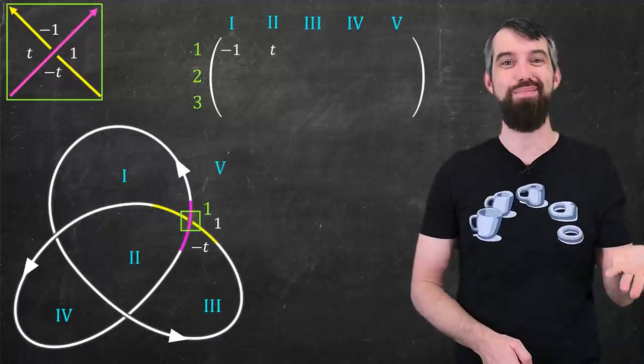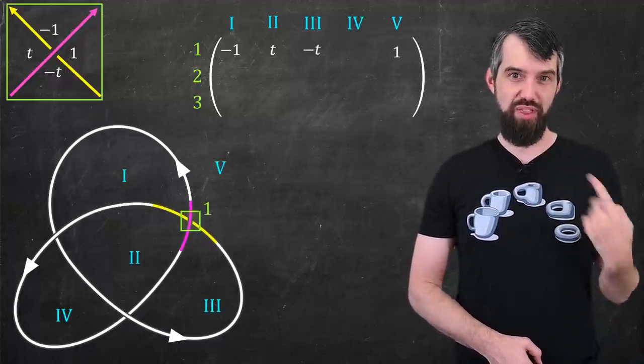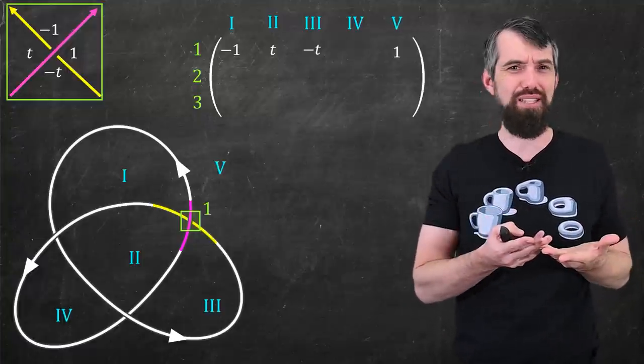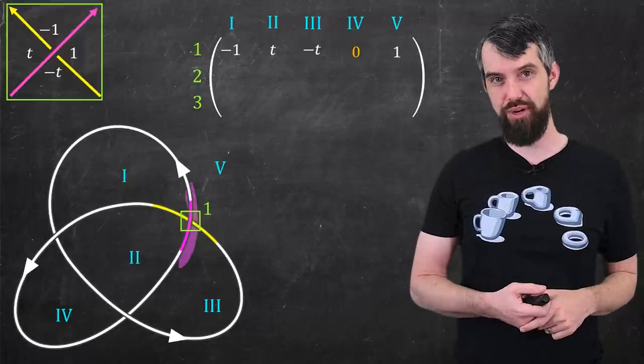And region number 5, there's a 1. The only thing is there's five regions, but there is no region 4 because region 4 has nothing to do with crossing number 1. So I'm just going to put a 0 in there for the matrix.